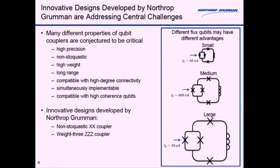That's actually quite good because it allows different properties that might be achievable in one system whereas it's harder in different systems. So it opens up the design space to have all these different regimes. I'm going to talk about a non-stoquastic XX coupler as well as a weight-3 ZZZ coupler which is targeting these high coherence qubit designs.